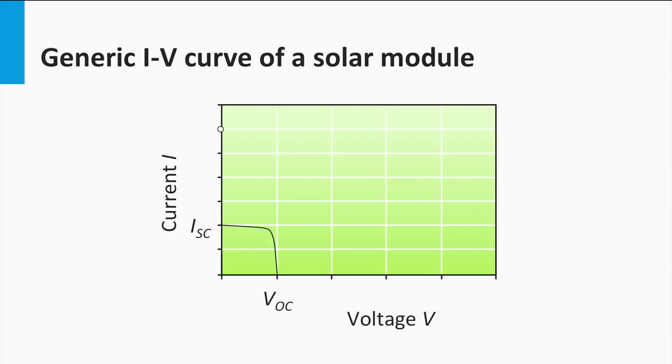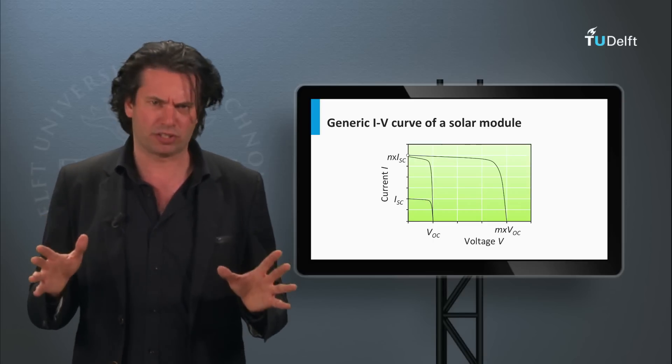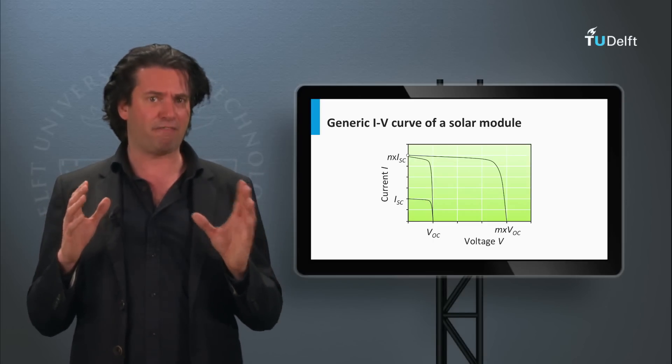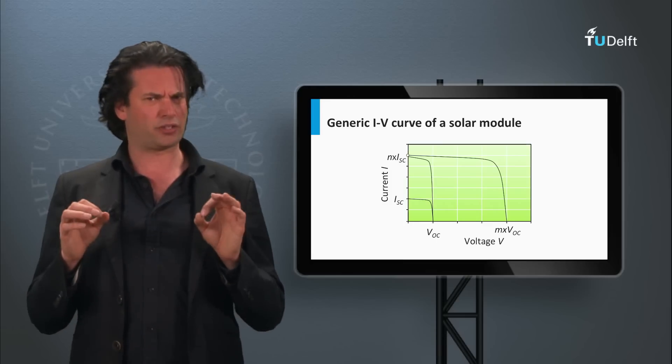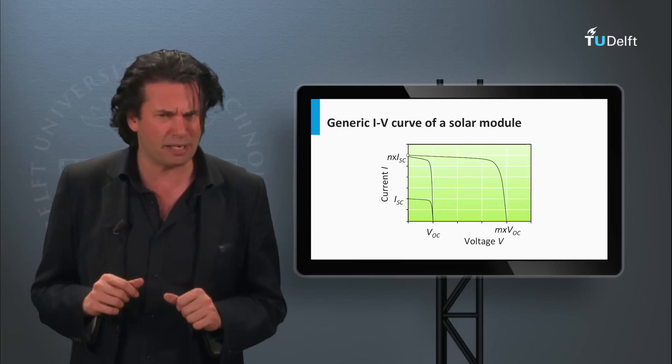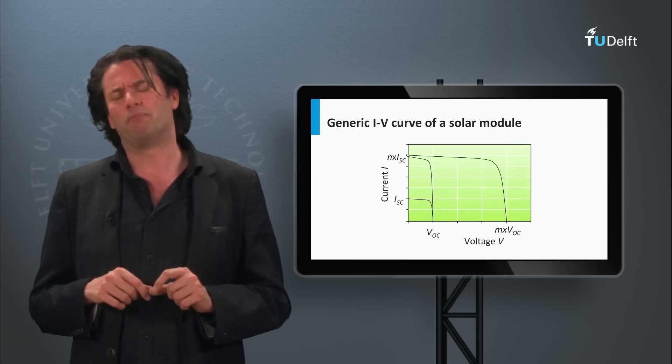You will remember that the voltage and current characteristics for a module with M identical cells in series and N identical cells in parallel will look like this. The current multiplies by a factor of N due to parallel connection and the voltage multiplies by a factor M due to a series connection. But what about the other parameters like efficiency and fill factor for a solar module? Do they increase, decrease or stay the same? Think about this for a moment.